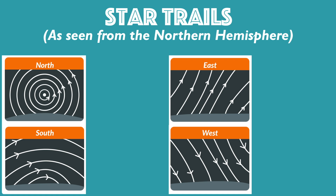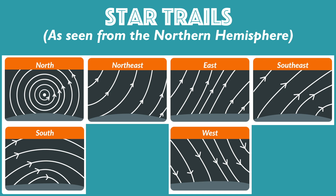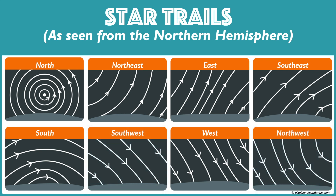Interestingly enough, though, the stars located slightly more towards the north in the eastern sky will still follow a somewhat counterclockwise direction, while those more southward from directly due east will appear to have a slightly more clockwise rotation. And the opposite is true for stars appearing in the northwestern and southwestern skies.